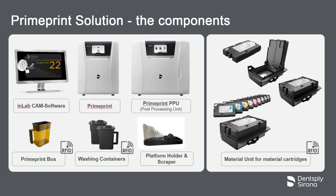The yellow PrimePrint box consists of the building platform and the transportation container, which protects the building platform, allowing for a safe, clean and seamless workflow while simultaneously providing UV light protection. The washing containers shown are used for pre-wash and final wash during the fully automated process inside PrimePrint PPU. The platform holder and its accompanying scraper make it quick and easy to remove the print object from the building platform.